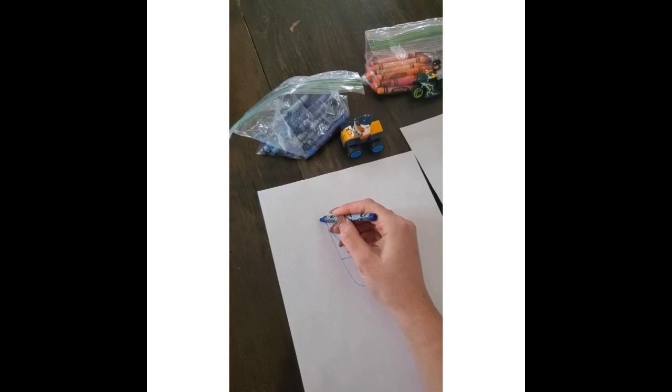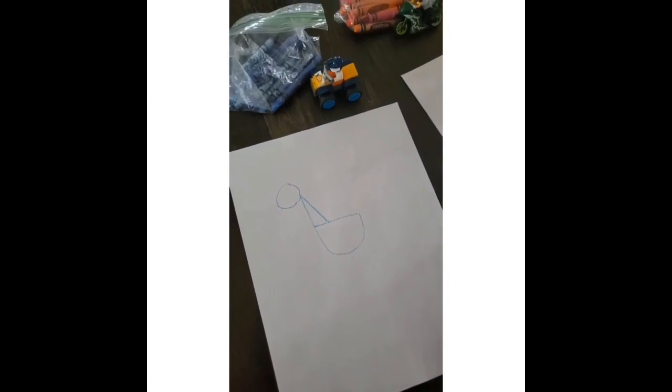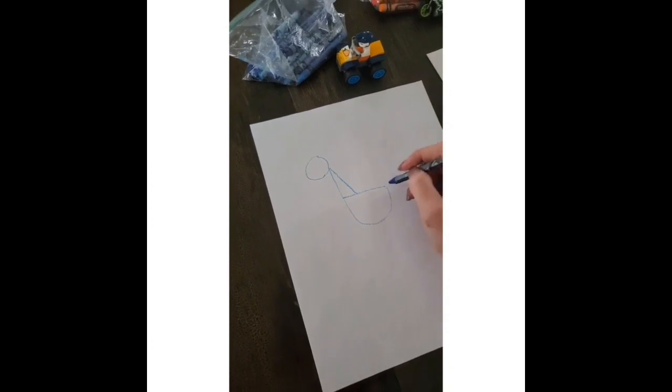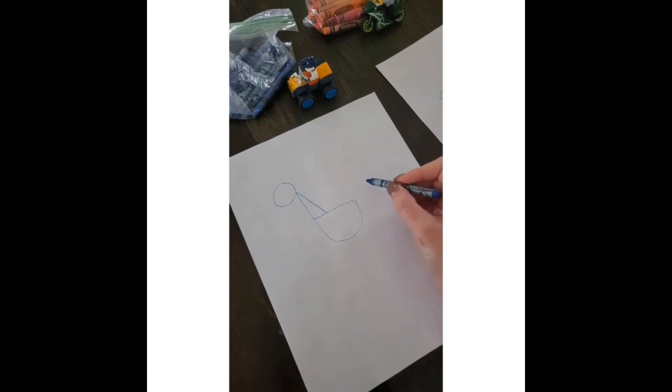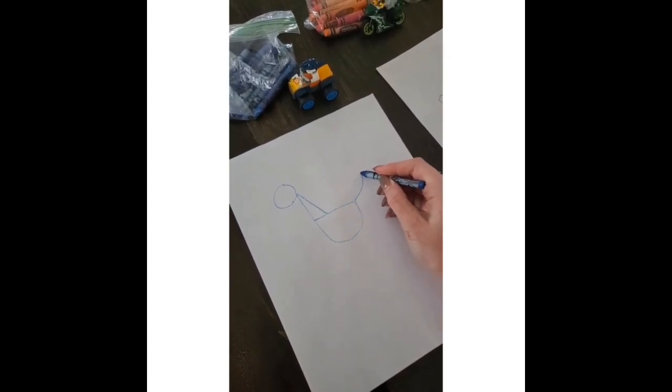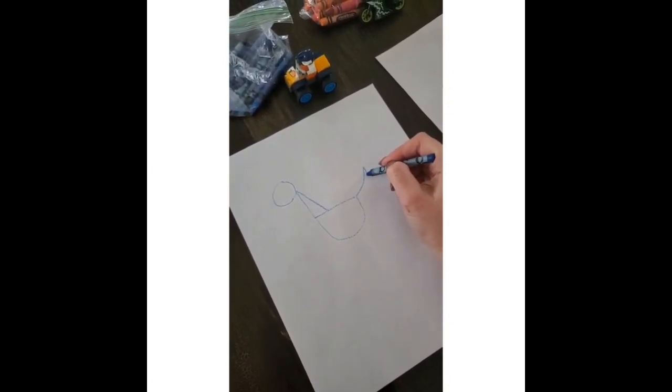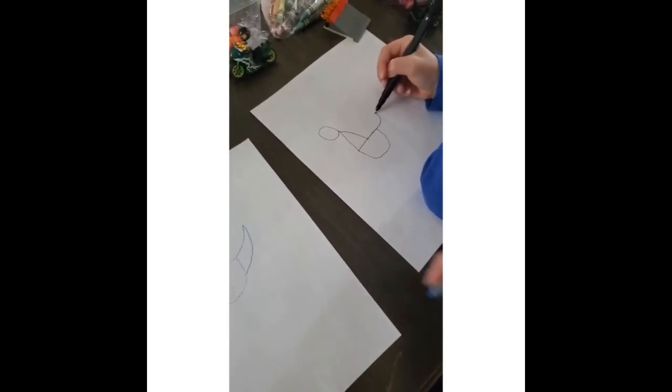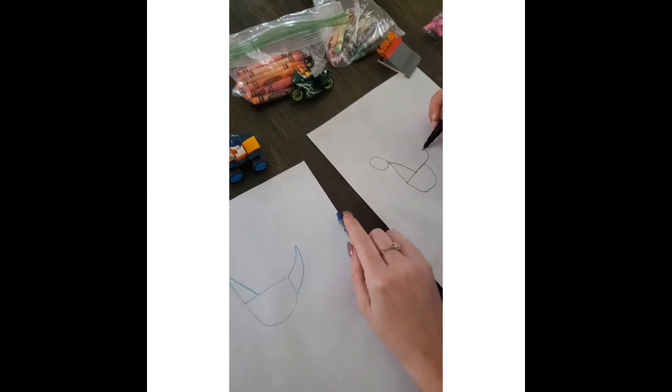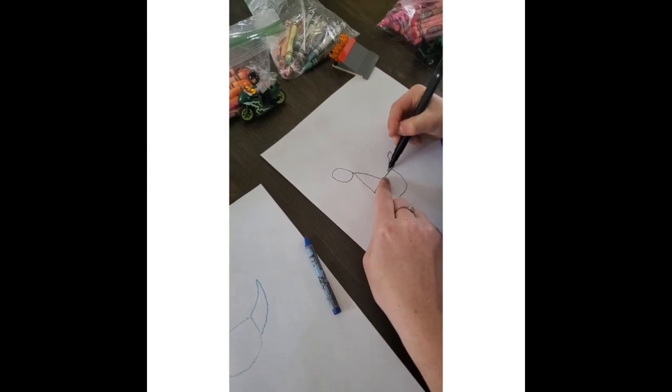Now back here, you're going to start at this very top right here and you're going to draw a curved line like that, and then go down like that. Yours looks really good. This will be his tail.